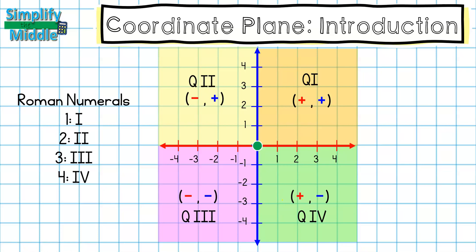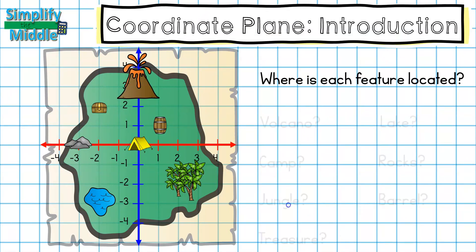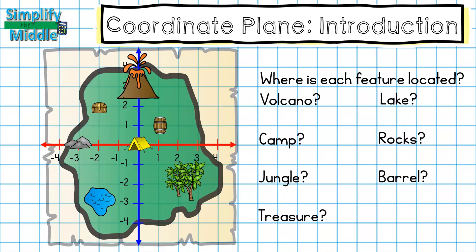We'll talk more about how to graph these later. For now, let's focus on how to identify where points are on the graph. Here I have a set of different features on my map, and I want to know what axis or quadrant each feature is in. My volcano is in the center of my blue vertical number line, which is called my y-axis. My lake is located down where everything is negative — starting from positive and going around in a C: quadrant one, two, three — so my lake is in quadrant three.